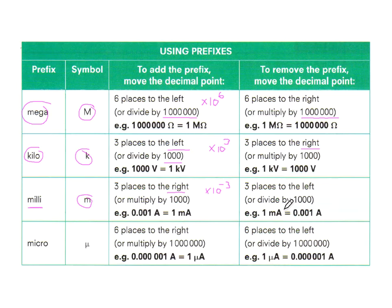If you want to divide, simply move three decimal places to the left. And finally, our micro. That's going to be times 10 to the minus six, which means we're going to move six places to the right if you want to multiply, six places to the left if you want to divide.